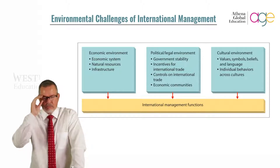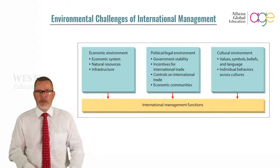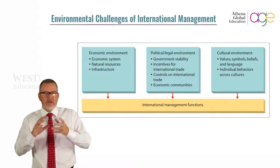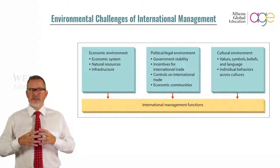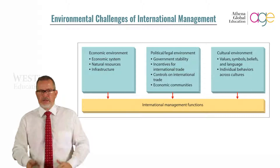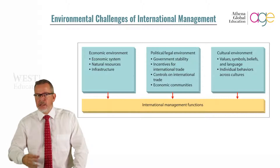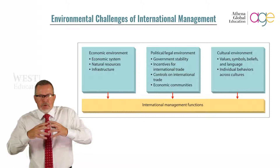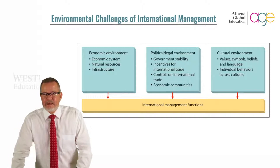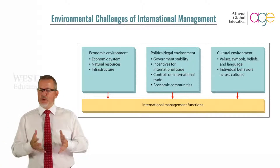On a political level, government stability and political stability in the region you're operating within matter — are there any dangers to your staff, employees, or customers? You also need to understand the incentives for international trade. For instance, if it's more cost-effective to manufacture in a different part of the world — maybe China, India, or South America — governments wanting to attract investment in those regions typically offer some kind of incentive. You also need to look at the economic communities you're going to operate within.